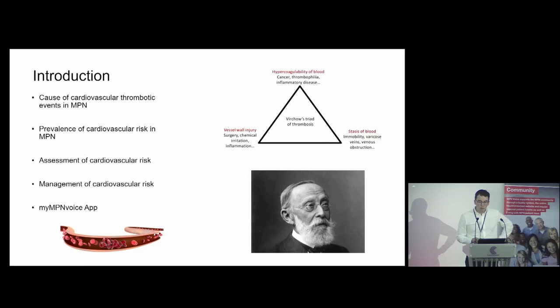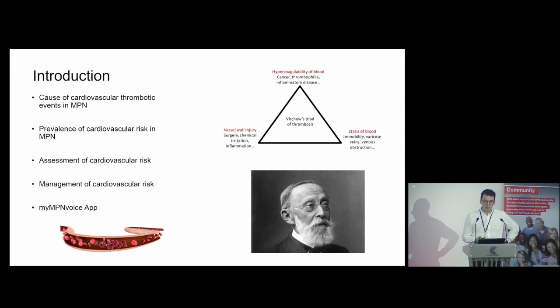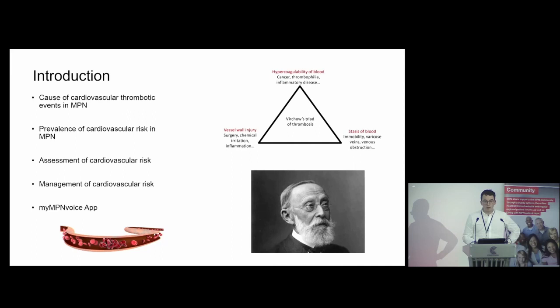The causes of venous thrombosis were first described back in 1856 by Rudolf Virchow, shown in the image here. They make up the well-known triad, which includes stasis of blood, hypercoagulability of blood, and damage to the blood vessel wall. Many of these factors apply to thrombosis in MPN, particularly the first two. Stasis can occur due to hyperviscosity observed with elevated blood counts — particularly red cells, but also platelets and white cells. There's also an inherent increased clotting potential with MPN, associated with the JAK2 mutation, as well as increased inflammation, which is certainly a feature of MPN and cancers in general.